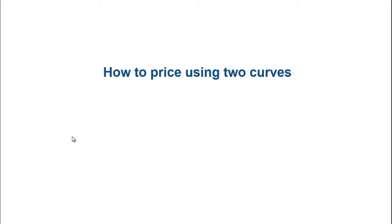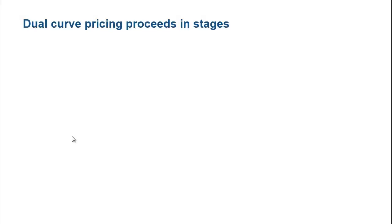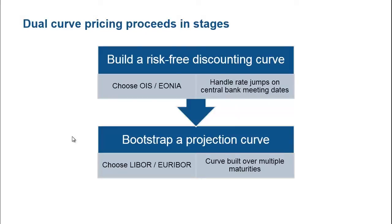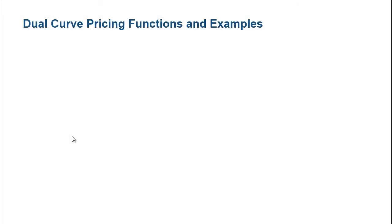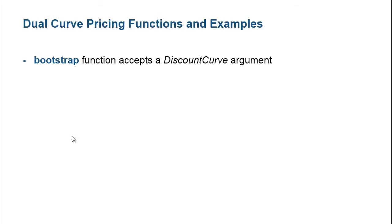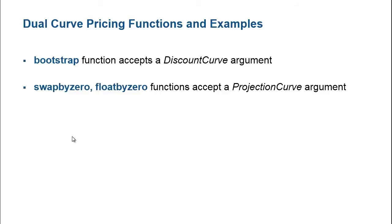So, how do we price swaps using dual curves? Dual curve pricing proceeds in two stages. In the first stage, we build a discounting curve from risk-free rates such as overnight index swaps or euro overnight index averages, taking into account complications around handling rate hikes after central bank meetings. After we build the discounting curve, we systematically bootstrap the projection curve for contractual cash flows. Financial Instruments Toolbox has dual curve pricing functions. The bootstrap function bootstraps interest rate curves from market data and accepts a discount curve argument. The swapbyzero and floatbyzero functions price swaps and floating rate notes from a set of zero curves and accept a projection curve argument.